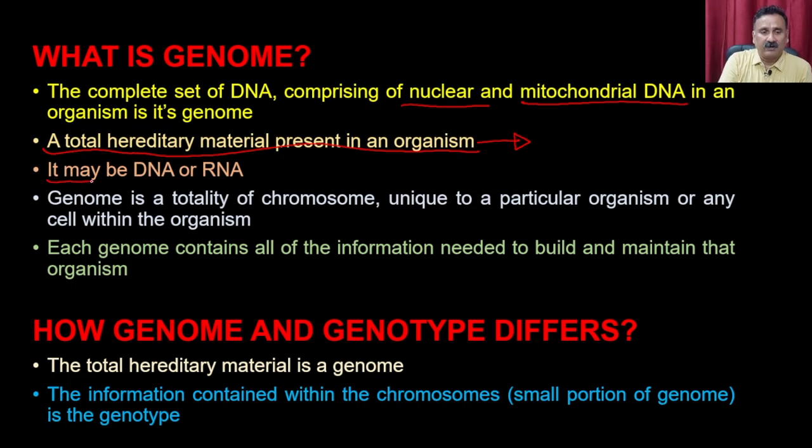In our previous lecture we discussed different types of traits. Although this course does not cover Mendel's experiments in detail, the key point is that the hereditary material present inside an organism — whether prokaryotic or eukaryotic — governs the transfer of genetic information across generations. This material could be DNA or RNA, since in the case of many organisms either can serve as the genetic material.